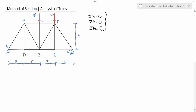That is why, while cutting the section, you have to keep in mind that the section should not pass through more than three members at a time. Now, regarding the sign convention: when a force is coming away from a joint it is tension, and towards the joint it is compression. Keep this in mind. Another convention in the method of sections is to treat all forces obtained by cutting the section as tensile — that is, coming out of the joint.